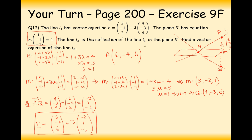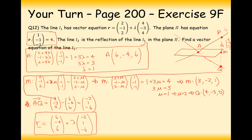To summarise: the first step was finding the intersection between line L1 and the plane. The second was finding the reflection of the starting point (2, -1, 2) on line L1 in the plane, down towards Q. Then we worked out the direction vector from A to Q, and created the line starting at position A = (6, -4, 6) going in direction (-2, 1, -6) to reach Q. That's the final answer for this section.